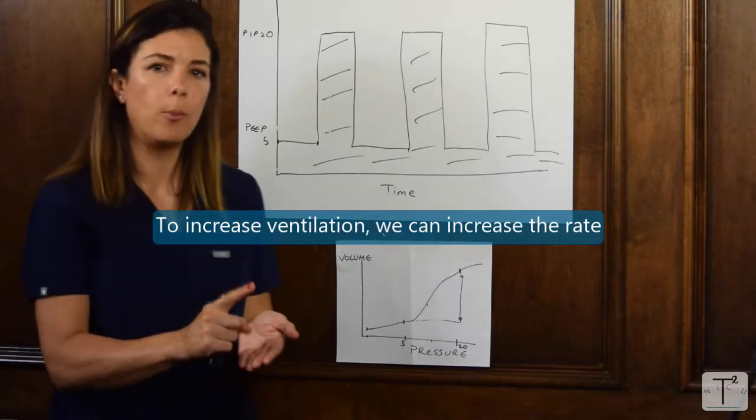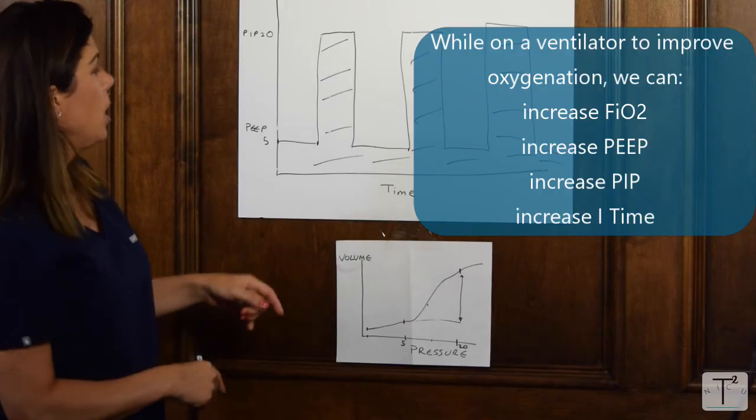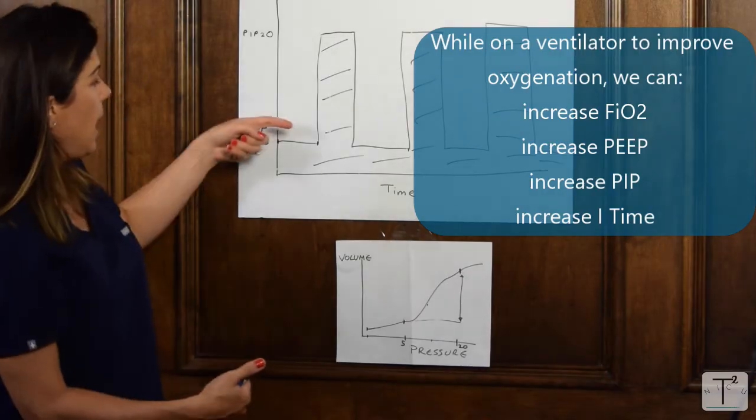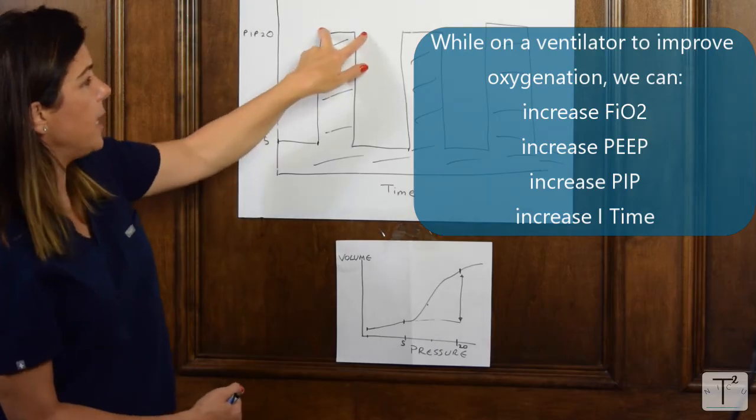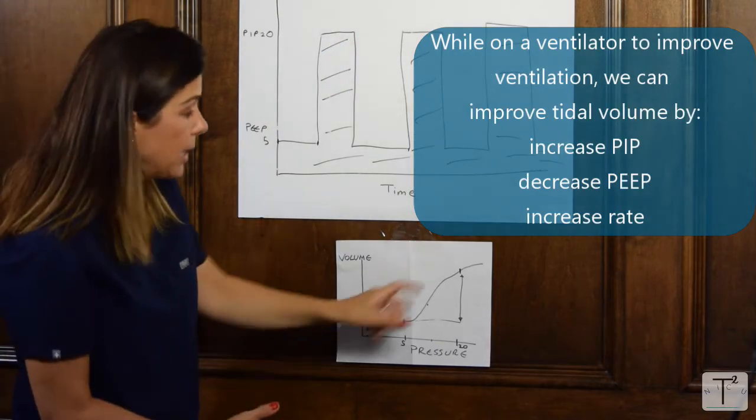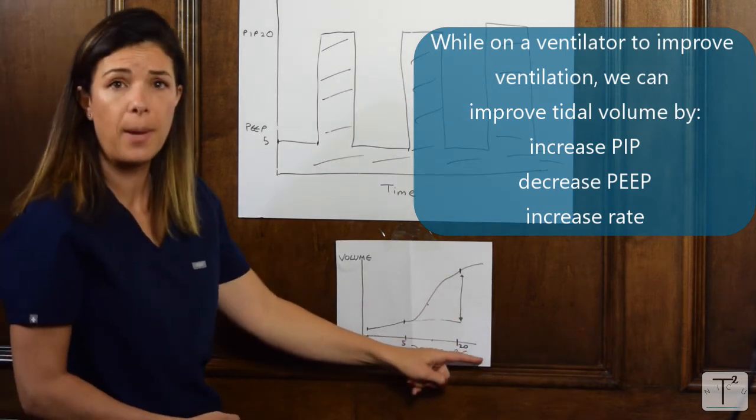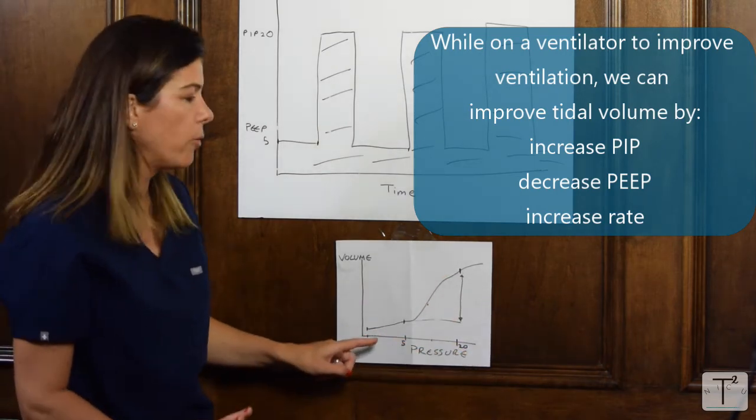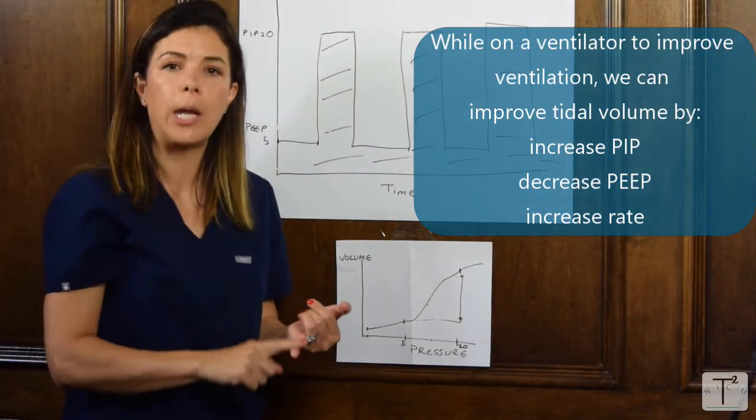I'm going to reiterate this one more time. On a breathing machine, to improve the oxygenation, you can increase the FiO2, increase the PEEP, increase the PIP, or increase the I time. To improve the ventilation, you need to improve the tidal volume, which you can do by increasing the PIP, decreasing the PEEP but we don't really want to do that, and then increasing the rate. All of those are going to improve the ventilation.